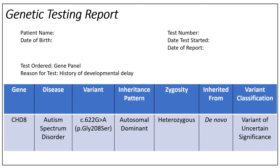On the screen is an example report we will be walking through. This example report has a genetic change or variant called a single nucleotide variant. A sequence variant means there is a change to a letter or a few letters within the DNA sequence. There are other types of genetic variants which may be displayed differently on reports. On this report, you can see there are many terms like autosomal dominant, letters and numbers to describe the variant, and words like heterozygous and de novo. We will walk through each of these terms today, and as a reminder, you can learn more about other terms that might be found on your report through our other videos.